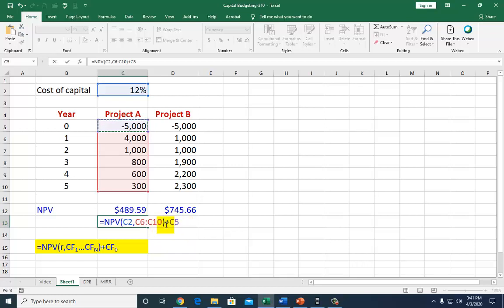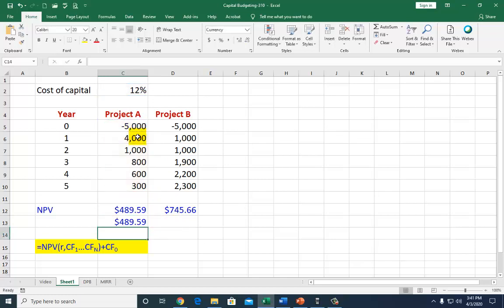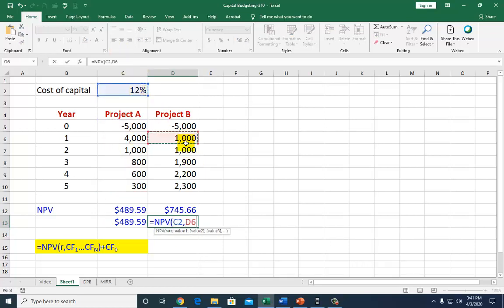So you hit enter. And that's it. And for this other one, we can do that real quick. Open parenthesis. And that's the rate. Comma. And get all the cash flows from the first to the last. Close. And then subtract the initial cost. And that's it right there. And that's how you get it. And so that's really all there is to it.